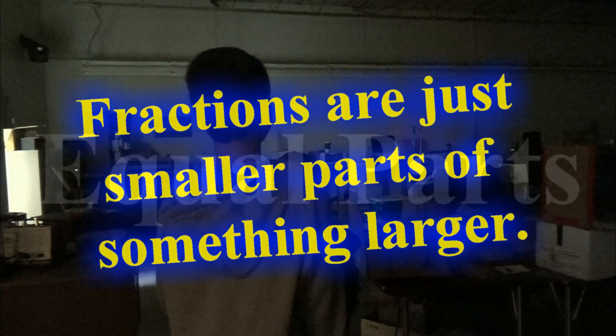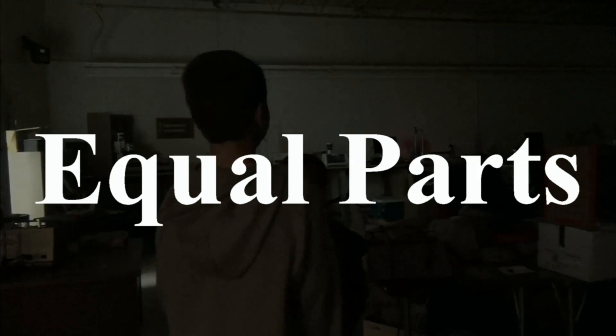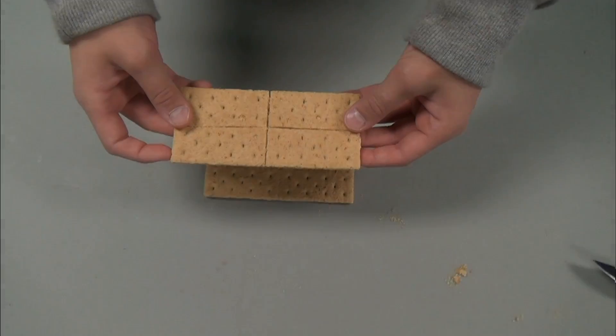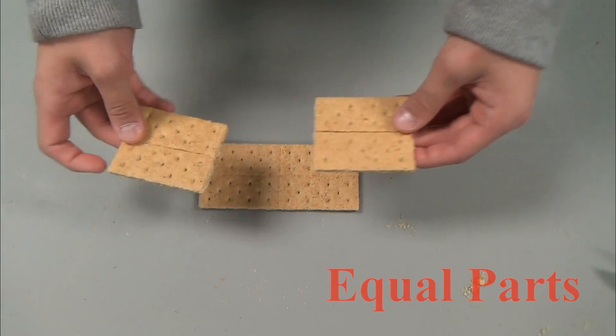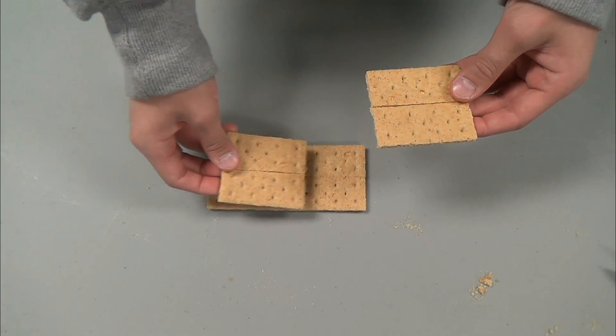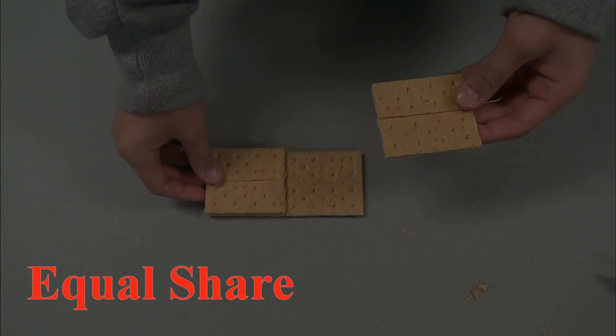Now let's learn about something called equal parts. If I break this graham cracker into two parts that are the same size, I will have equal parts. One half is for you, and one half is for me. We could call this an equal share.